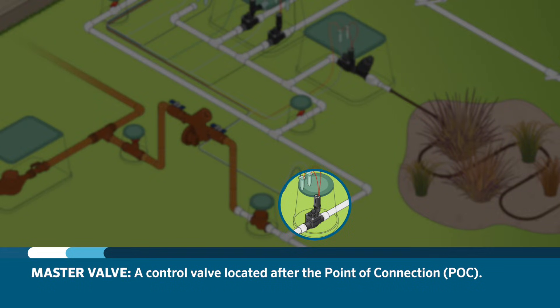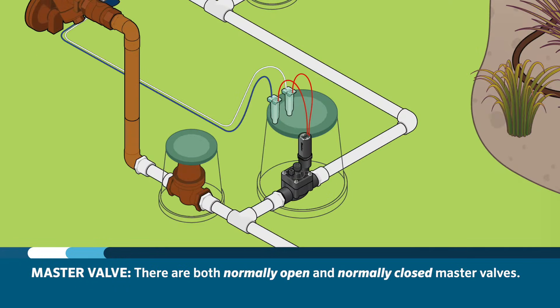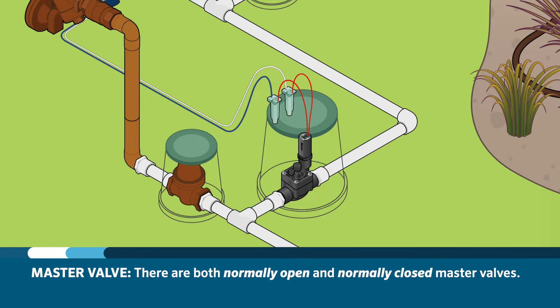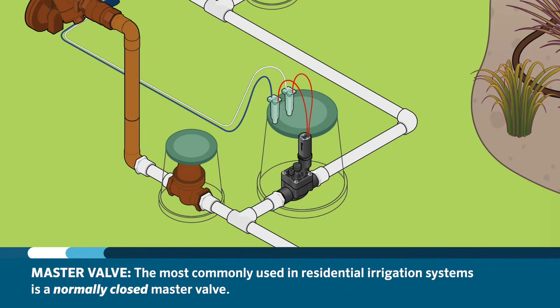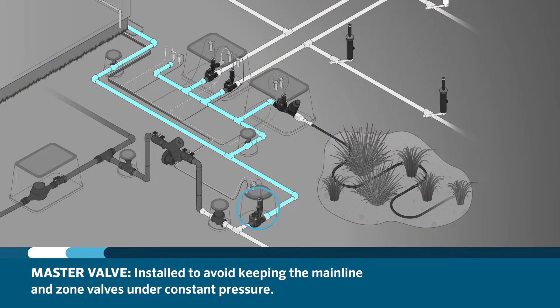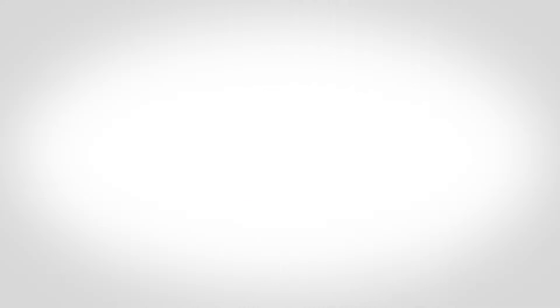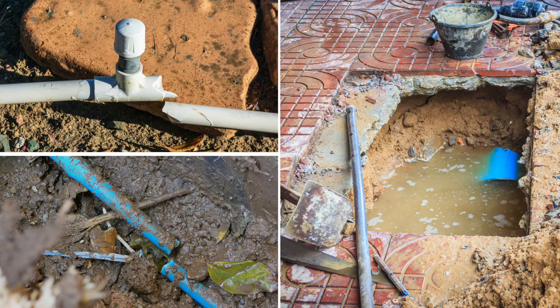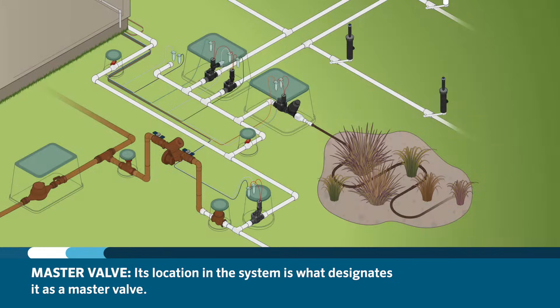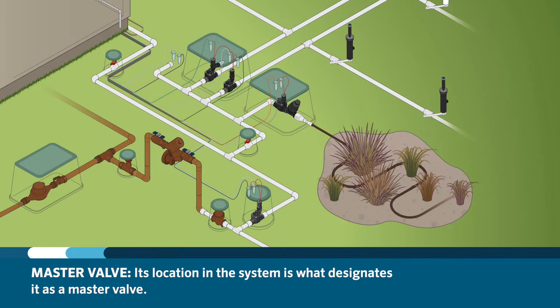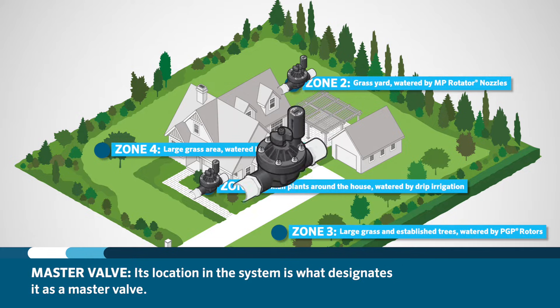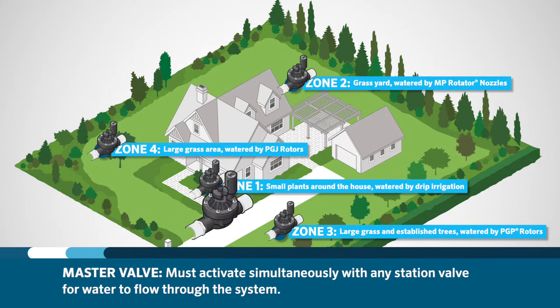After the pressure regulator, an optional and highly recommended device known as a master valve can be installed. The master valve in most cases is simply a control valve located after the POC. There are both normally open and normally closed master valves. Since a normally closed master valve is the one most commonly used in smaller irrigation systems, we will be referring to that type during this training. A master valve is installed to avoid keeping the mainline and zone valves under constant pressure, preventing damage created by irrigation mainline leaks. For example, you may use a Hunter ICV for both a station valve as well as a master valve. The master valve must activate simultaneously with any station valve for water to flow through the system.